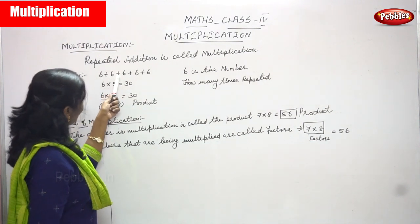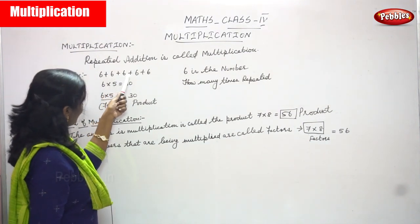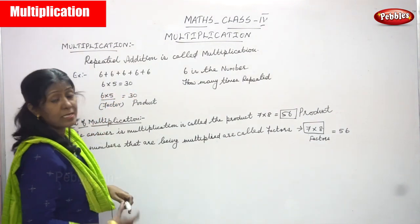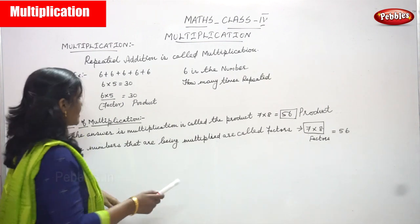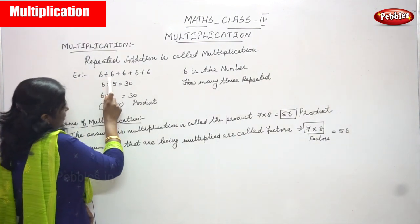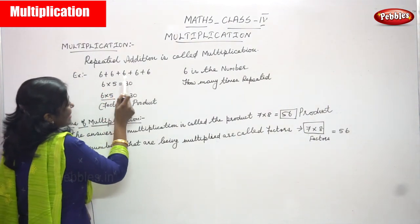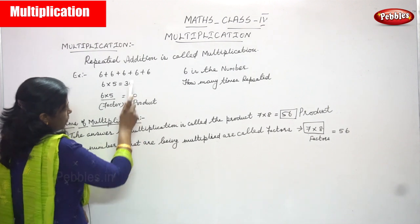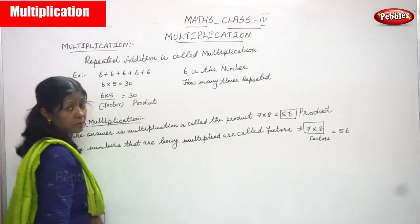6 plus 6 plus 6 plus 6 plus 6. Count: 6 plus 6 is 12, 12 plus 6 is 18, 18 plus 6 is 24, 24 plus 6 equal to 30.